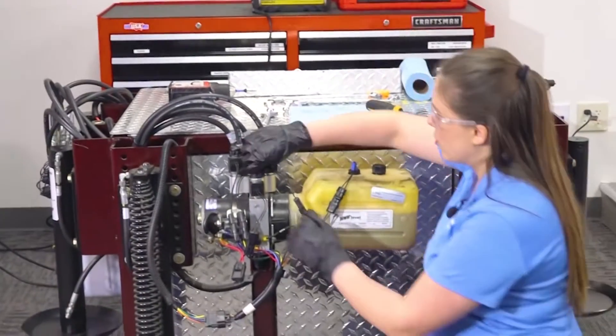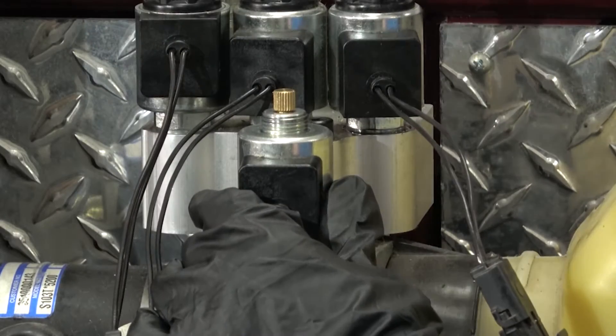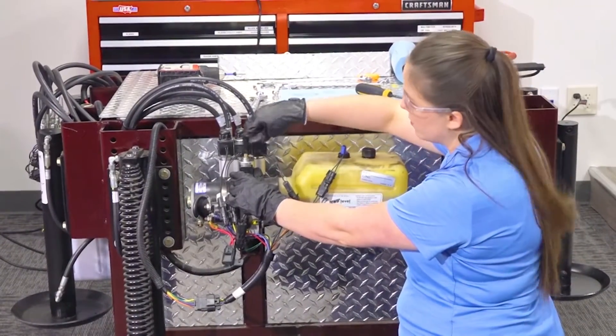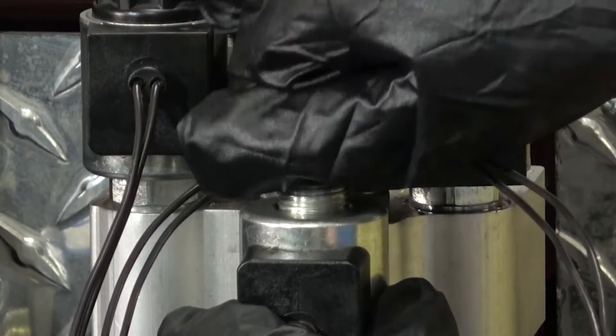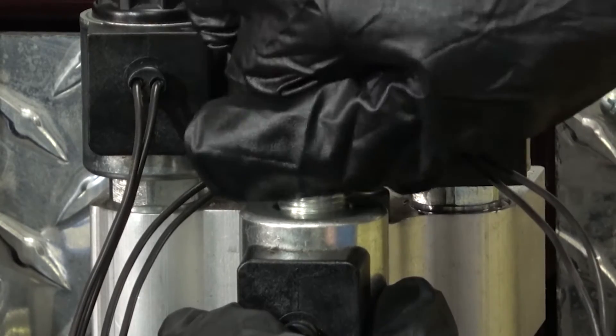To do that, you'll open up this dump valve, take the cap off and set it to the side. This is where you can manually open this valve. So you'll turn that counterclockwise, open the valve up all the way.